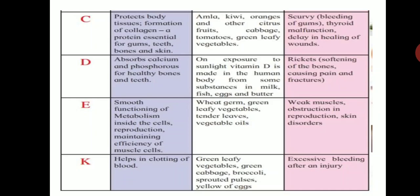Vitamin C protects body tissues and aids in the formation of collagen, a protein essential for gums, teeth, bones, and skin. Sources of vitamin C include amla, kiwi, oranges and other citrus foods, cabbage, tomatoes, and green leafy vegetables. Deficiency of vitamin C causes scurvy — where there is bleeding from gums — thyroid malfunction, and delay in the healing of wounds.